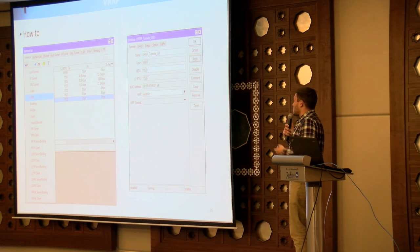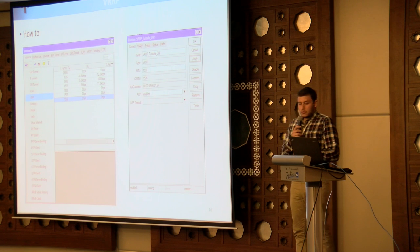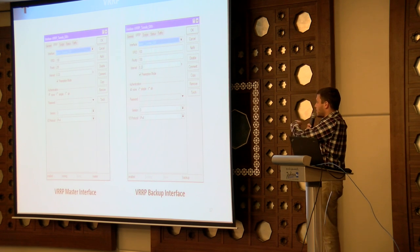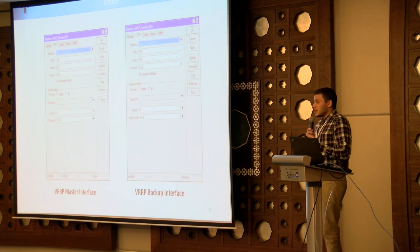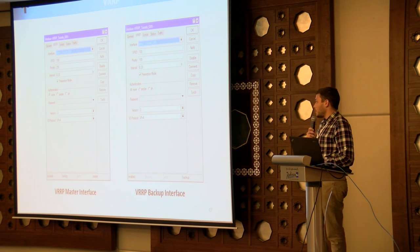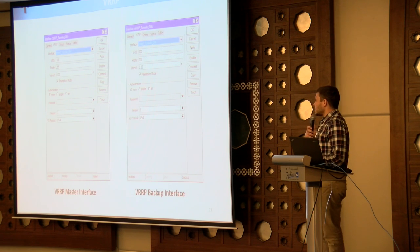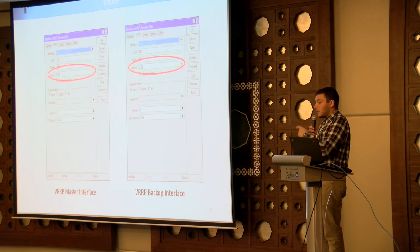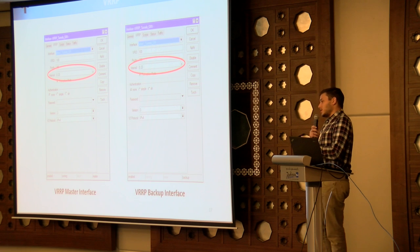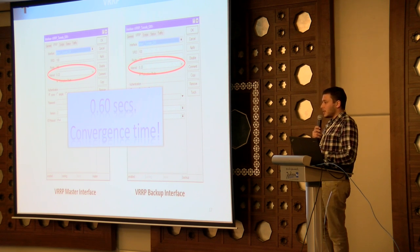Now let's configure VRRP. It's very simple — go to the interface menu and add VRRP, set a name, select the interface where you want VRRP to run, set the virtual router identifier which is the same for both redundant routers, priority 255 for the master and lower for the backup. To speed up convergence I changed the default 1-second announcement interval to 0.20 seconds. Since backup routers wait three times the announcement interval, this gives us 0.60 seconds of convergence time — much better than the default three seconds.